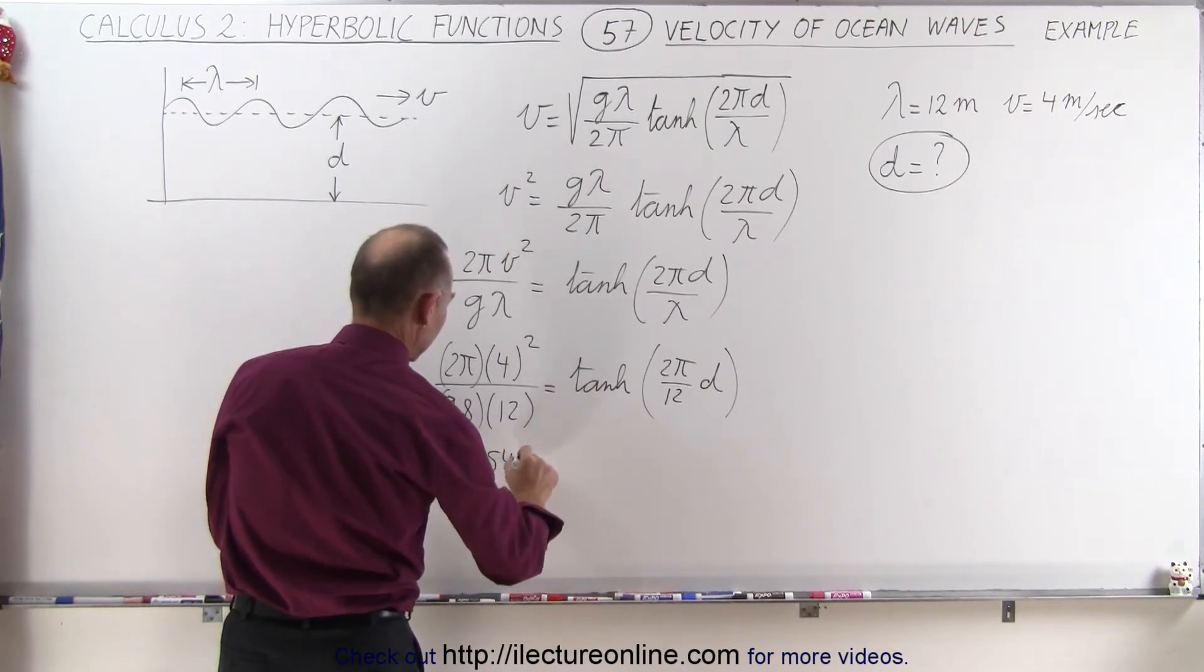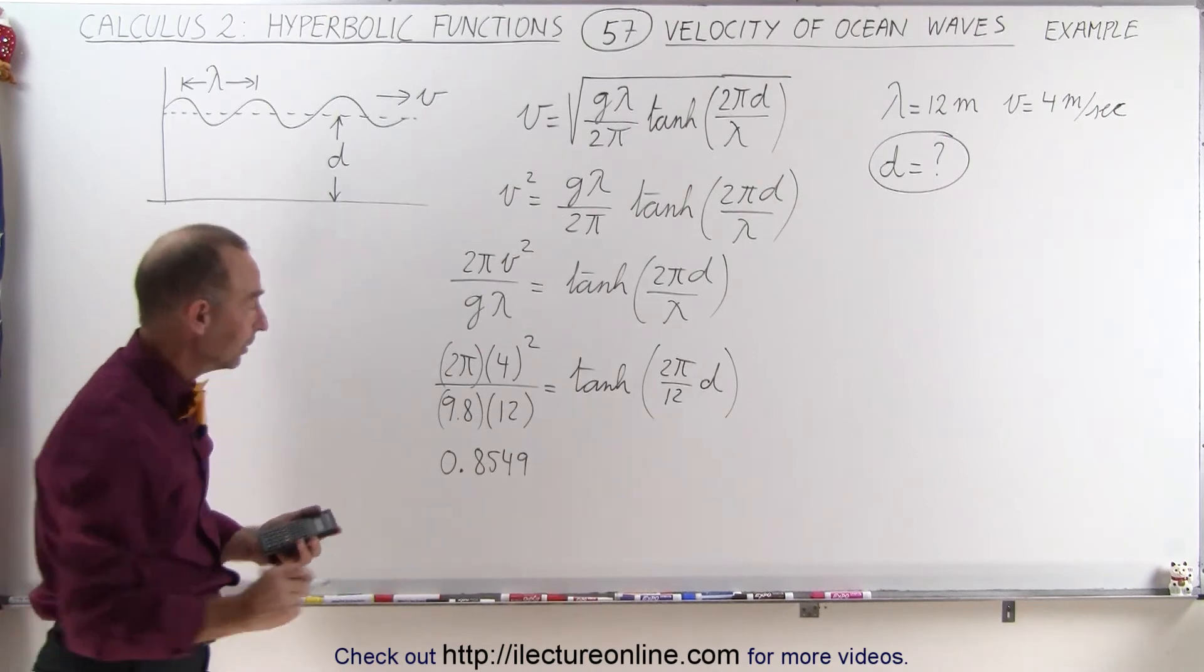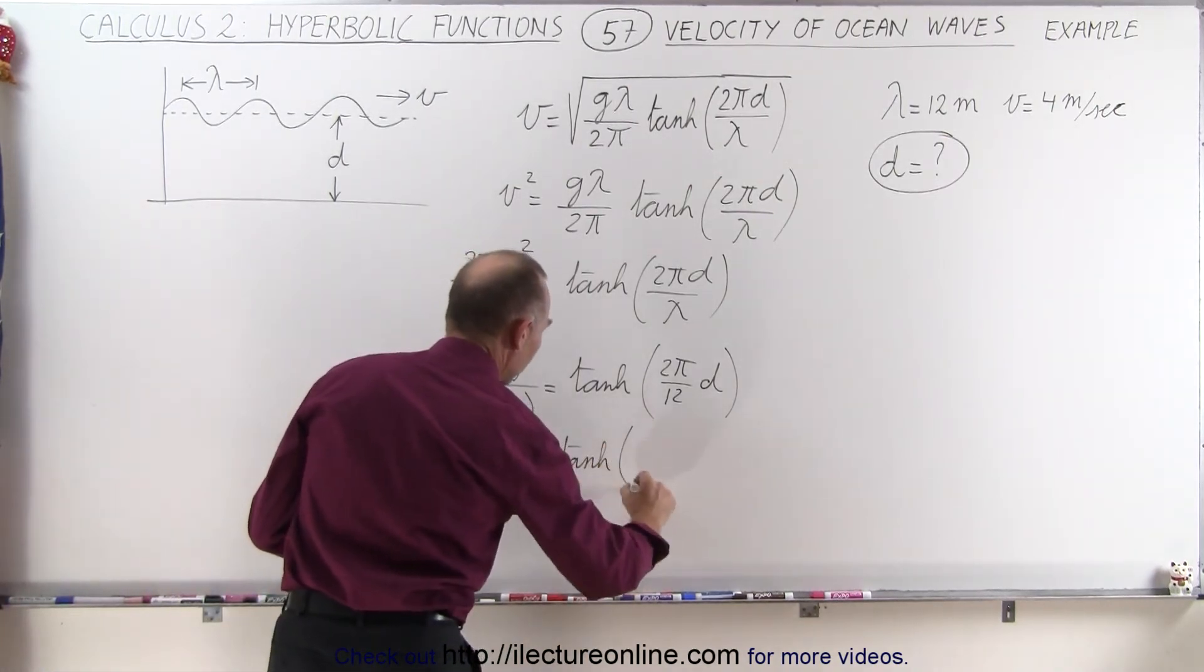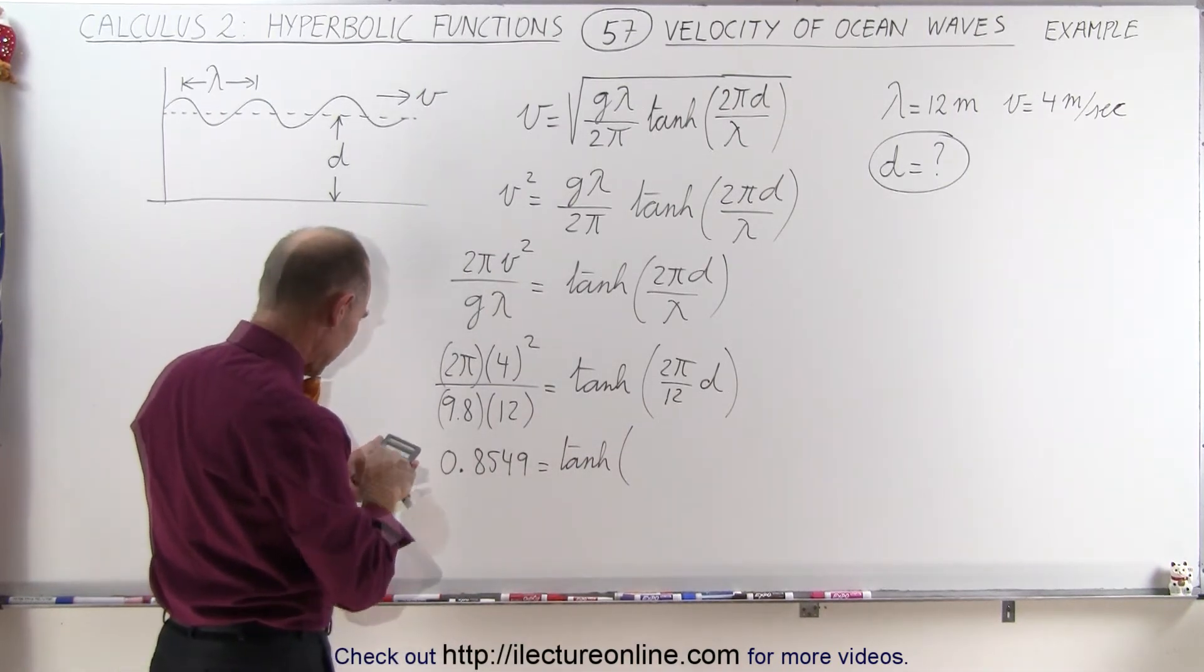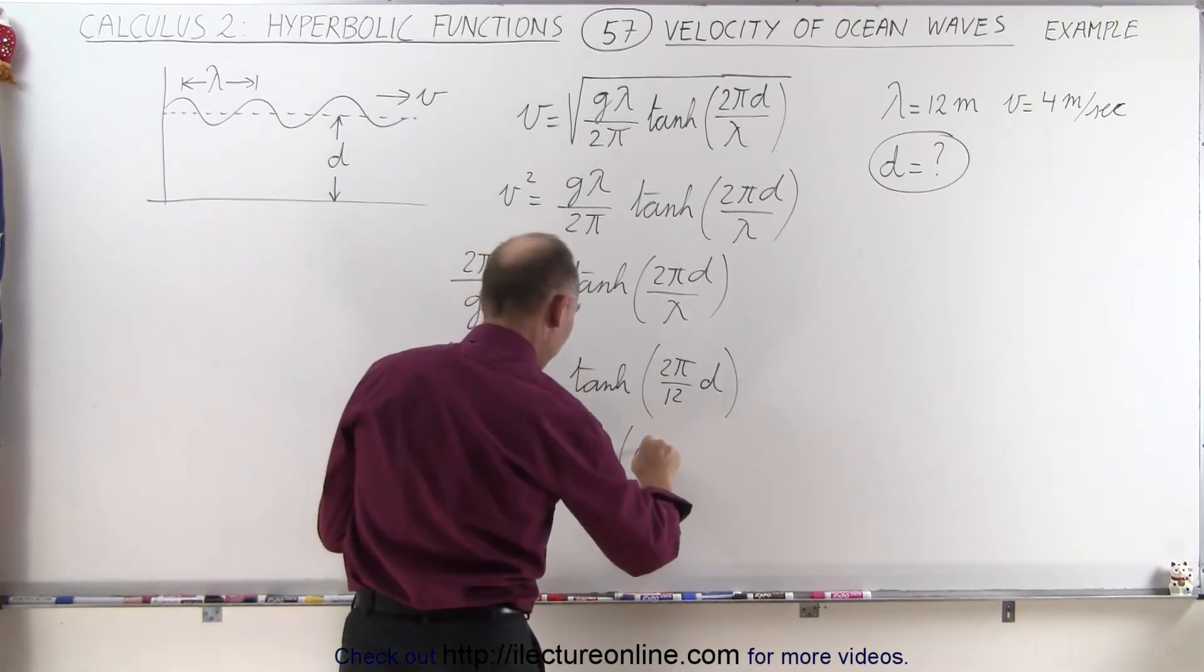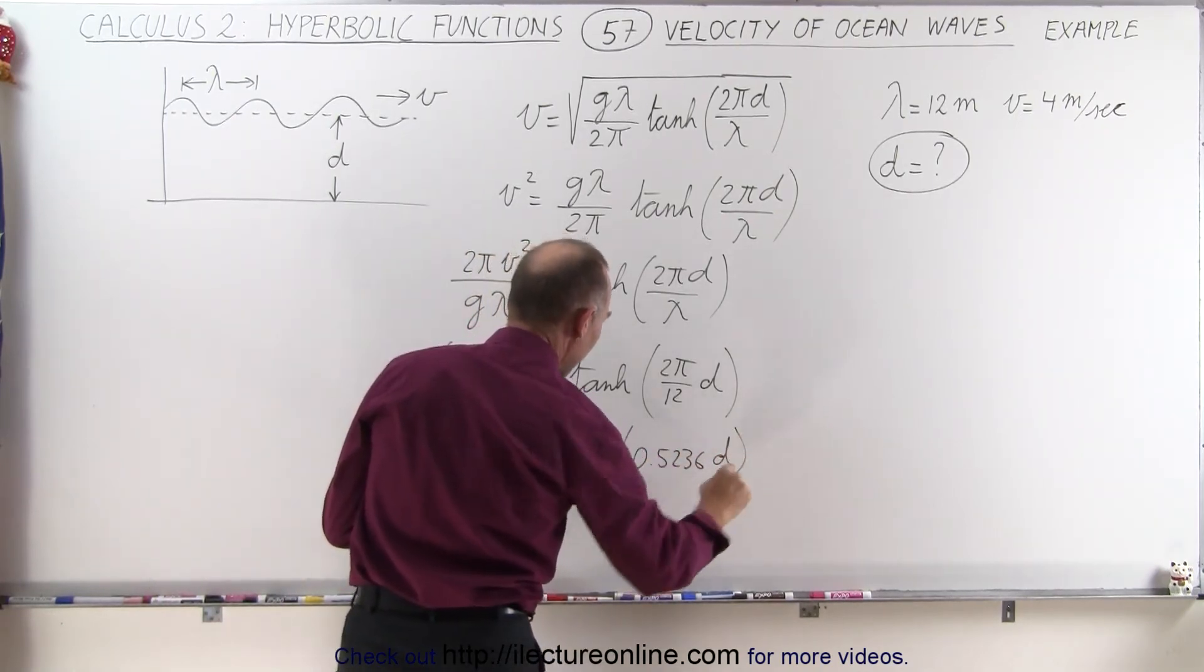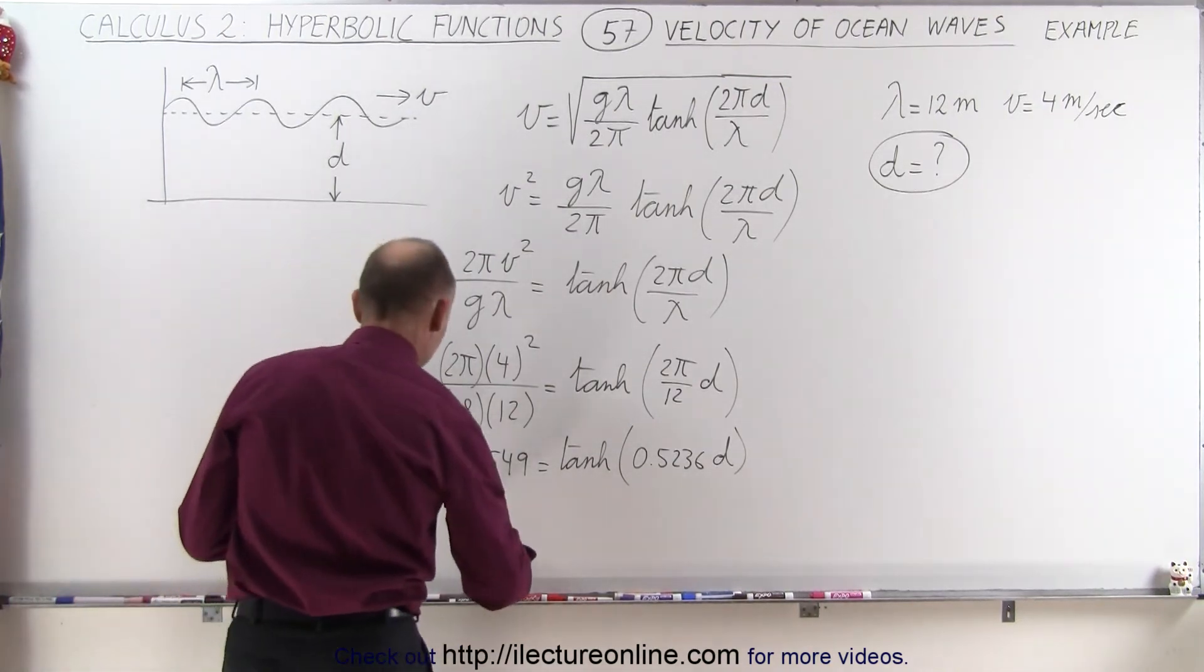0.8549. I'm keeping a few extra decimal places so we don't have a rounding error. So this is equal to the hyperbolic tangent, not yet the inverse, of 2 times π divided by 12, which is 0.5236 times d. And now we have to find d.